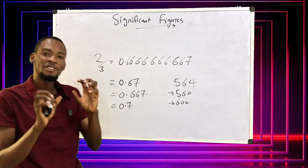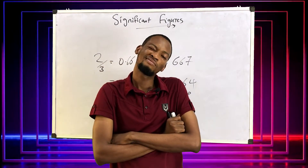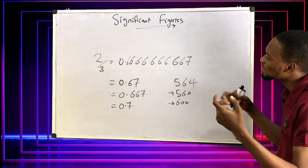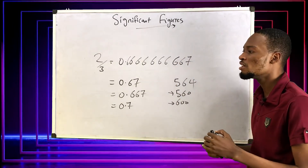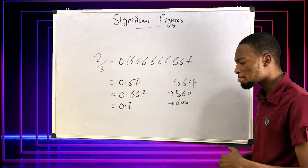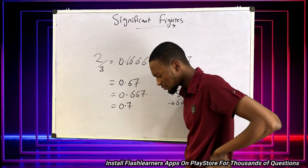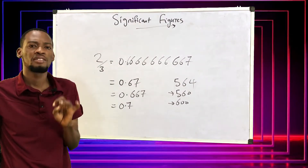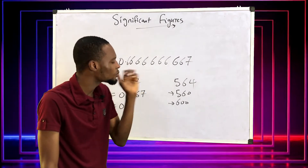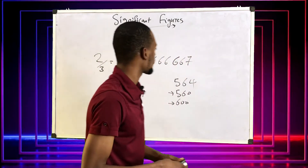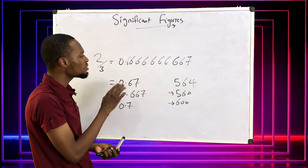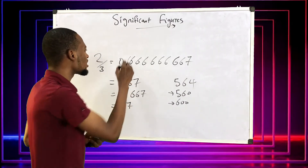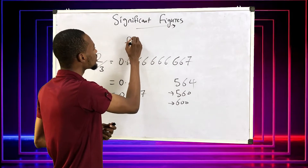Now, what is the first significant figure? What is the second significant figure? And what is the third significant figure? In mathematics, when you are given any number, the first digit that is not zero is your first significant figure. Given this number beginning with 0.6666, the first number that is not zero is 6 — this is the first significant figure.